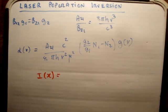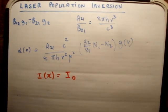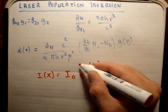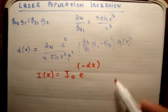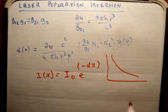...is equal to the incident irradiance, or the incident power, times a decaying exponential, e to the negative alpha of x. So, we would see something like that, a decaying exponential.